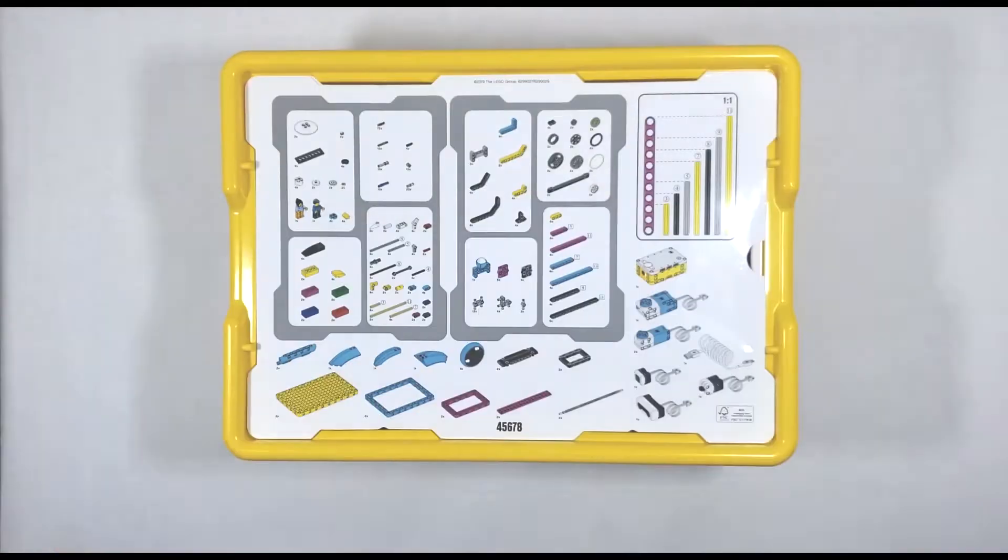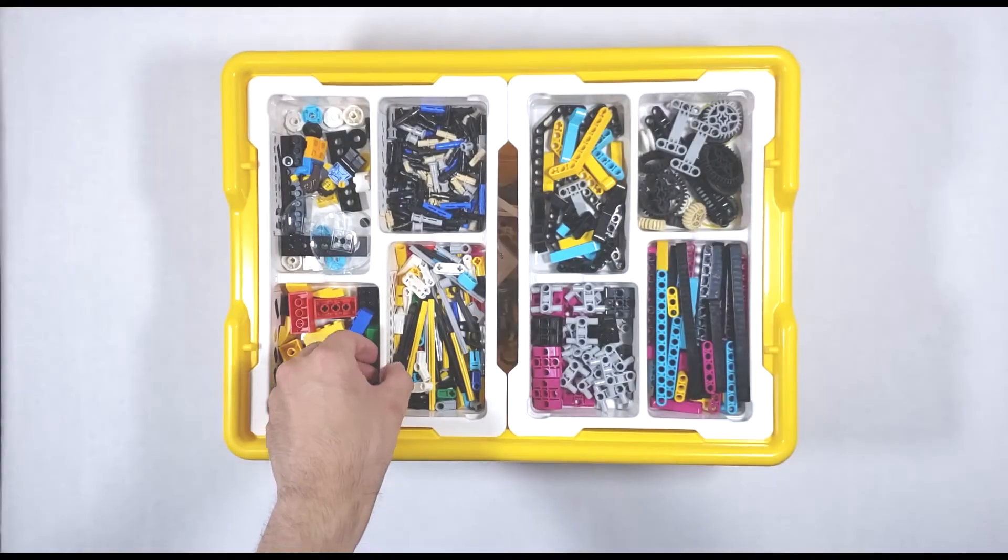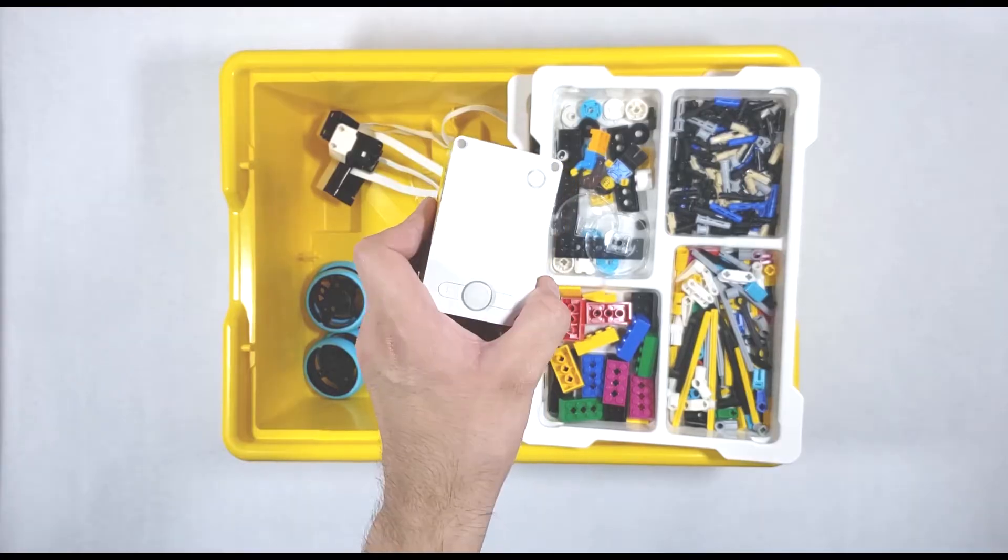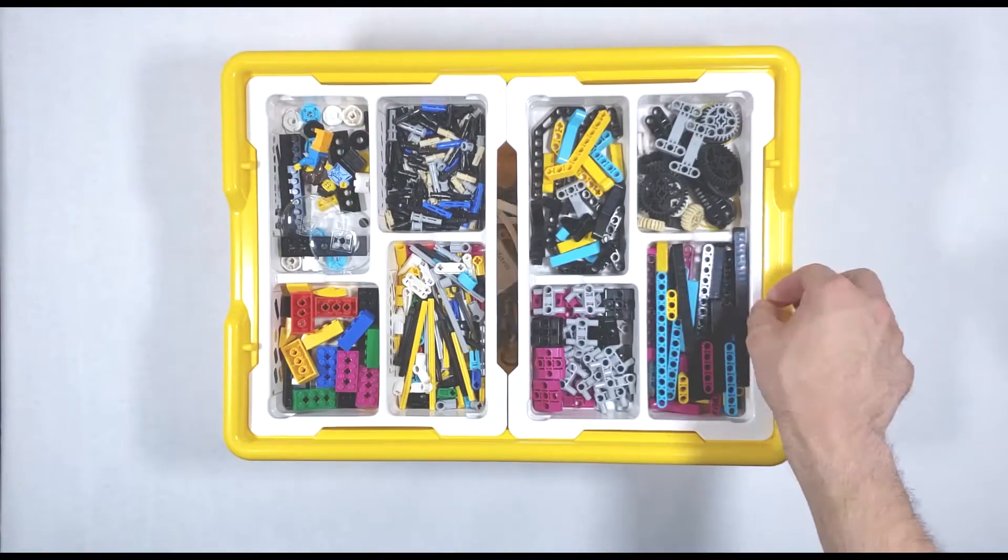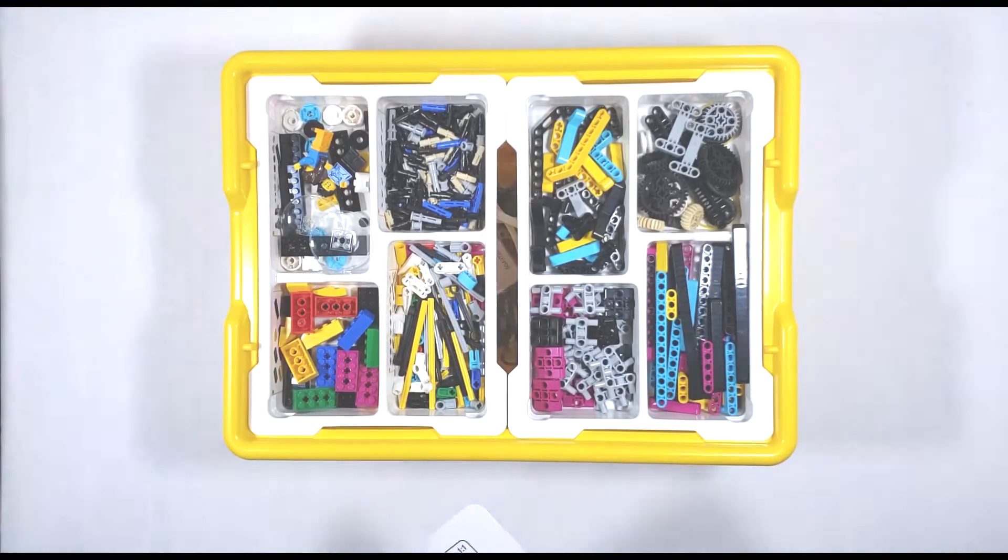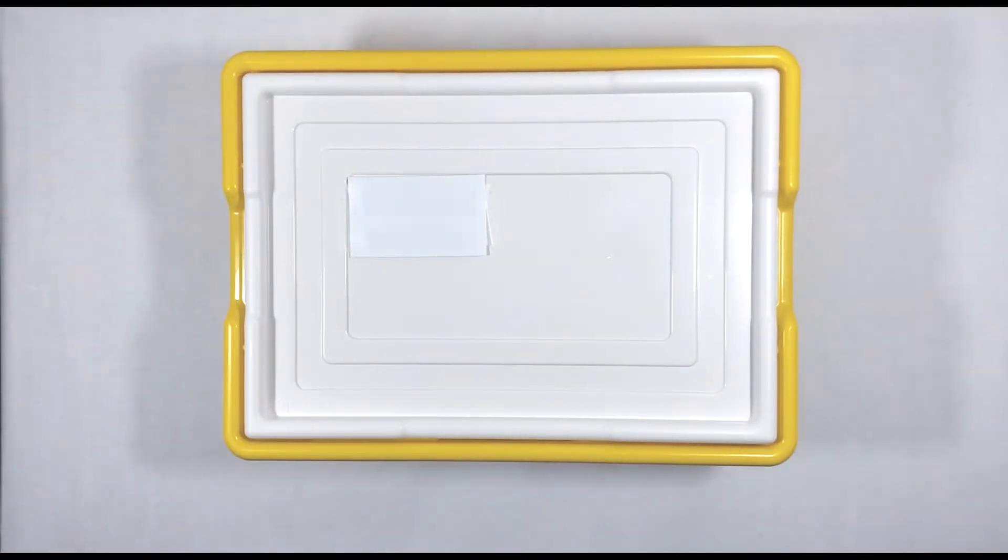So what we've got here is the Spike Prime LEGO Education set. This robotics kit comes with a programmable central hub, multiple motors and sensors, and a total of 528 individual bricks to build pretty much anything you want.